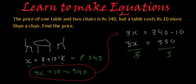And if we divide both sides by 3, this 3 and this 3 will get cancelled and 3 ones are 3, 3 ones are 3, 3 ones are 3 and 0. So we have got x is equal to 110 which is the cost of the chair.